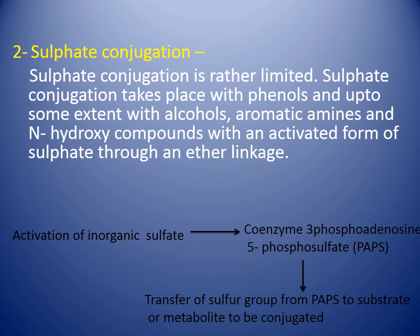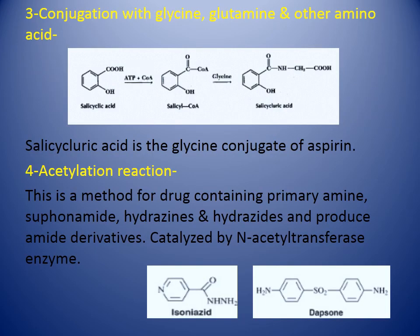Now coming to sulfate conjugation. Sulfate conjugation is rather limited. It takes place with phenols and to some extent with alcohols, aromatic amines, and N-hydroxy compounds, with an activated form of sulfate through an ether linkage. Firstly, there is activation of inorganic sulfate to form PAPS — which is the coenzyme 3-phosphoadenosine-5-phosphosulfate. This PAPS helps in transfer of the sulfate group from PAPS to the substrate or metabolite to be conjugated.